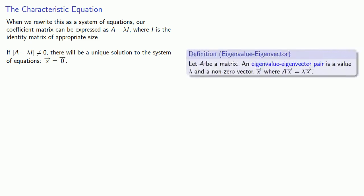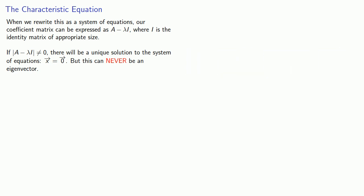But we've specifically excluded the zero vector as a possibility for an eigenvector. So if the determinant is non-zero, the only solution we get is the zero vector, which is not an eigenvector. That means for any possibility of a solution, we have to have the determinant equal to zero. This gives us something called the characteristic equation.